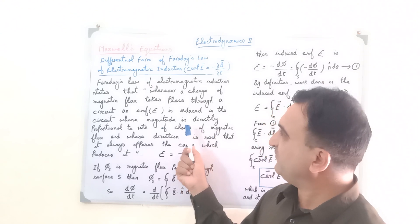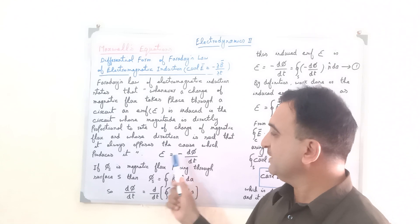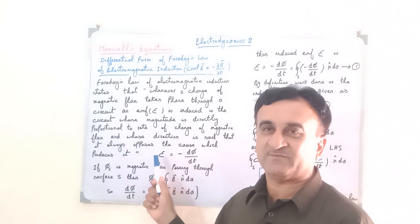This is the mathematical form of Faraday's law of electromagnetic induction. This minus sign shows that the direction of induced EMF will oppose its cause.